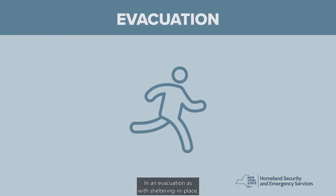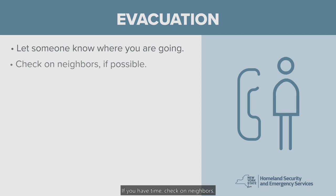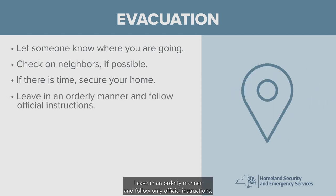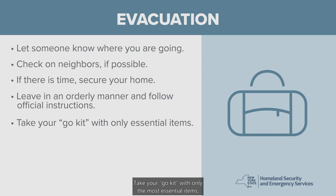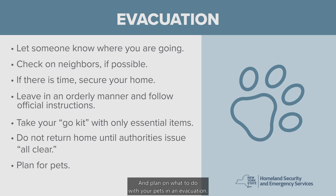In an evacuation, let someone know where you are and where you plan on going. If you have time, check on neighbors. Before you leave, secure your home by moving valuables to a safe location, turning off utilities, locking doors and windows, and boarding up the home. Leave in an orderly manner and follow only official instructions. Know your destination and routes in advance. Take your go-kit with only the most essential items — water, food, flashlight and batteries, first aid kit, medications, cash, etc. Do not return home until local authorities advise it is safe. Plan on what to do with your pets in an evacuation and check that where you are going accepts pets.